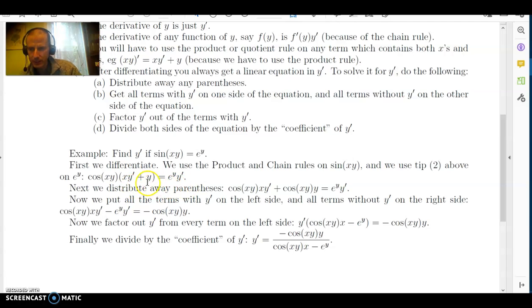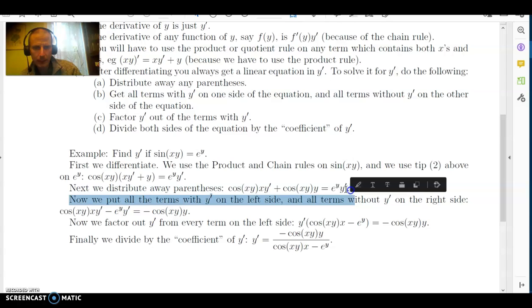Now we distribute away the parentheses, which means I just have to multiply this cosine of xy into each term inside these parentheses, which gives us that cosine of xy times xy prime plus cosine of xy times y is equal to e to the y times y prime. So now I'm going to put all the terms with y prime on the left-hand side of the equation and all the terms without y prime on the right-hand side. So when I look over this, I see that this is the only term without y prime. So I subtract it from both sides of the equation. That'll cancel it from the left and make it minus on the right. So we get a minus cosine of xy times y on the right. And then I want to move this term with y prime over to the other side of the equation. So I will subtract it from both sides of the equation, which will eliminate it from the right-hand side and add a minus e to the y times y prime on the left-hand side.